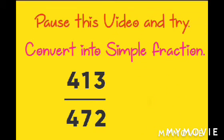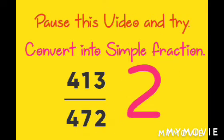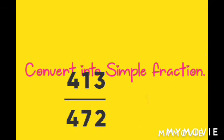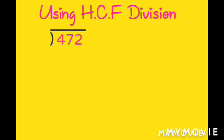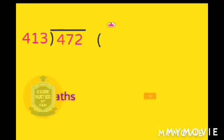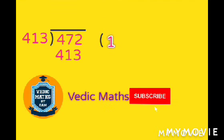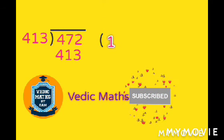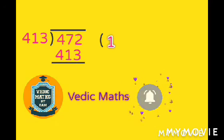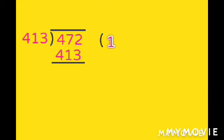Ask in the comments which part of the government exam is a doubt for you — I will clear your doubt in the next video. Using the HCF division method, put the biggest number inside the two lines: put 472 inside and put 413 outside the lines.